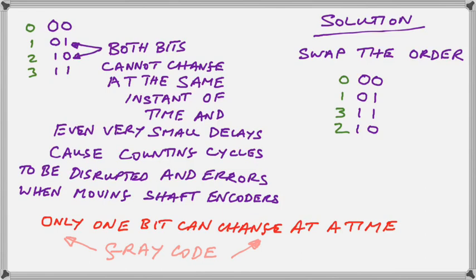Notice on the upper left corner, we have the regular binary pattern 0, 0, 0, 1, 1, 0, 1, 1. We notice that when we're trying to go from 1 to 2, both bits have to change at the same time. So we rearrange the pattern and swap the order so that we go 0, 1, 3, 2. Now only one bit changes as we go from one row to the next.